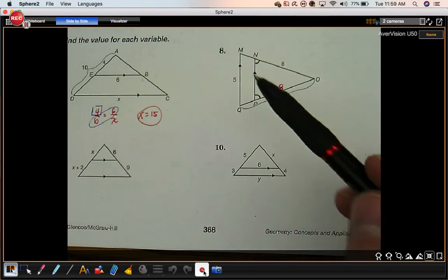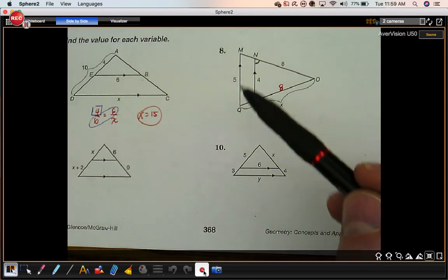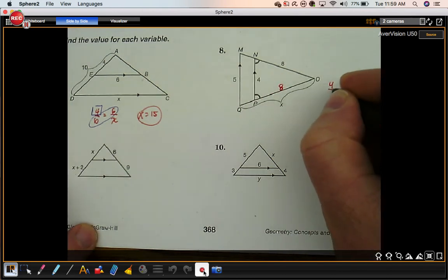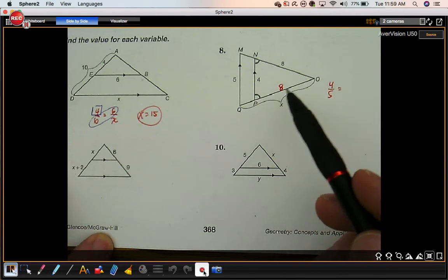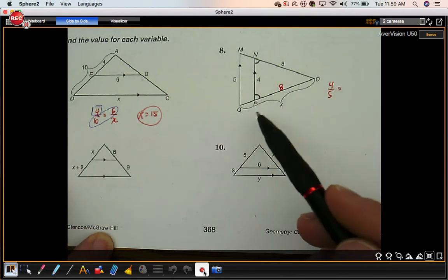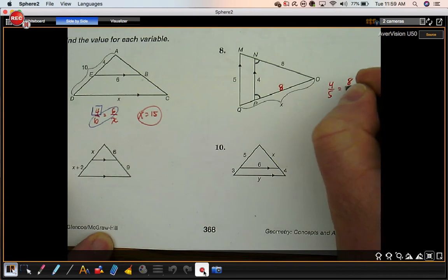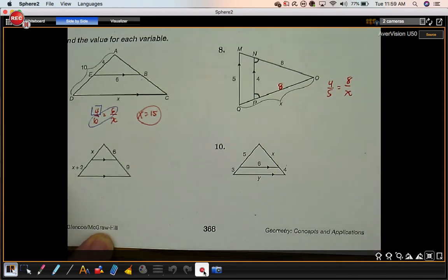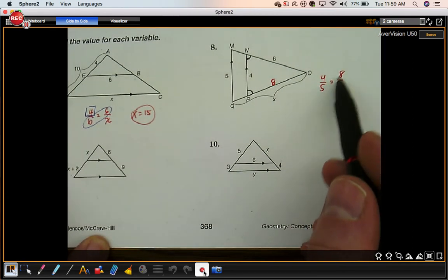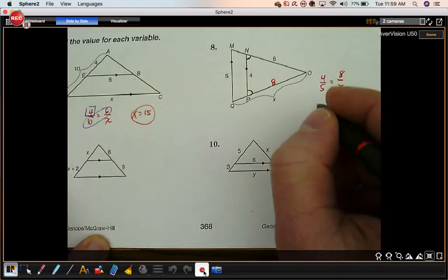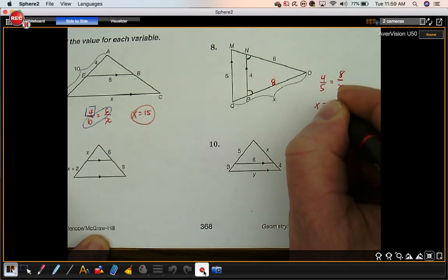Okay, this is an entire side, that's an entire side. 4 to 5. Now make sure you do entire side to entire side over here. 8 to x. 8 times 5 is 40. 40 divided by 4 is 10.